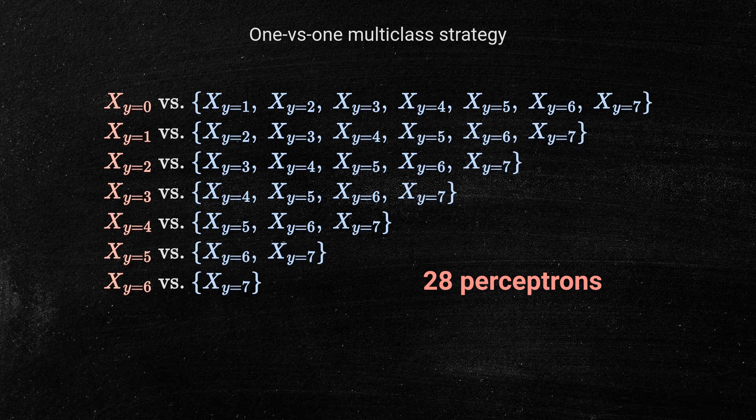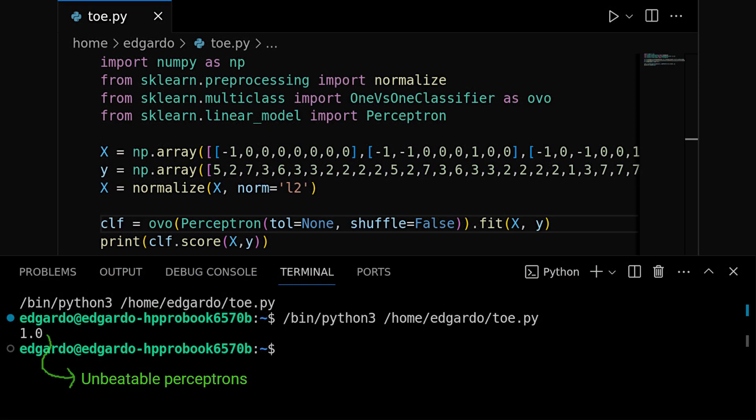In this specific case, the strategy, using perceptrons, creates an unbeatable tic-tac-toe classifier, assuming the machine always starts in the upper left corner.